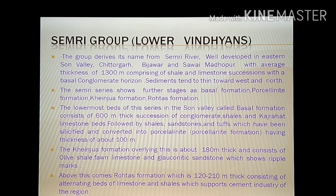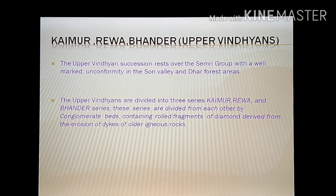The Khenjwa formation overlying this is about 180 meters thick and consists of olive shale, limestone, and glauconitic sandstone showing ripple marks. Above this comes the Rotas formation, which is about 120 to 210 meters thick, consisting of alternating beds of limestone and shales, which supports the cement industry of the region.